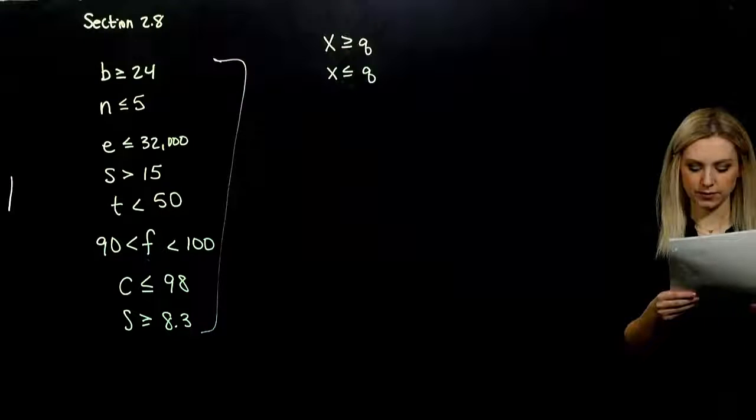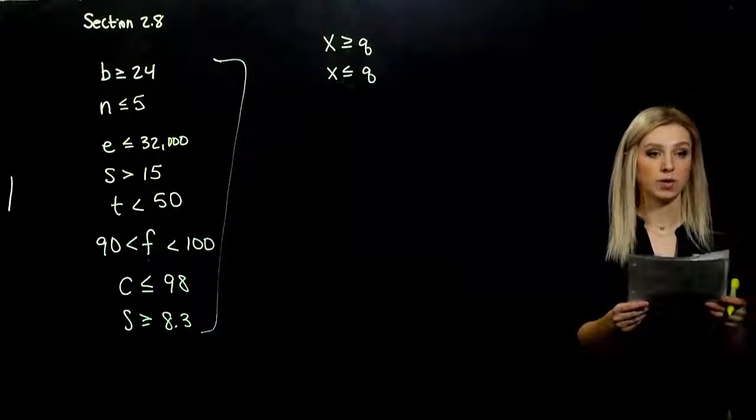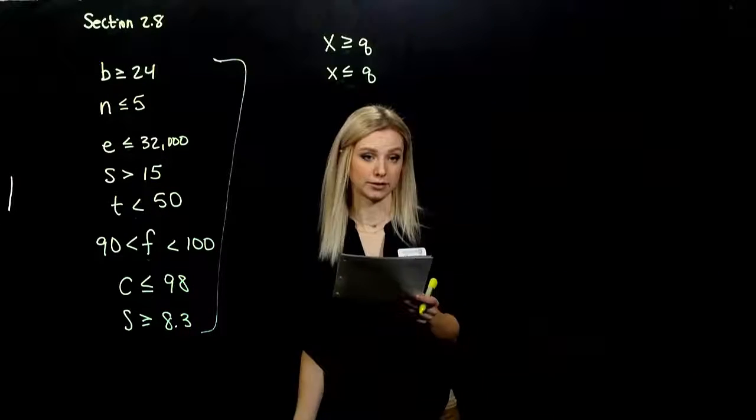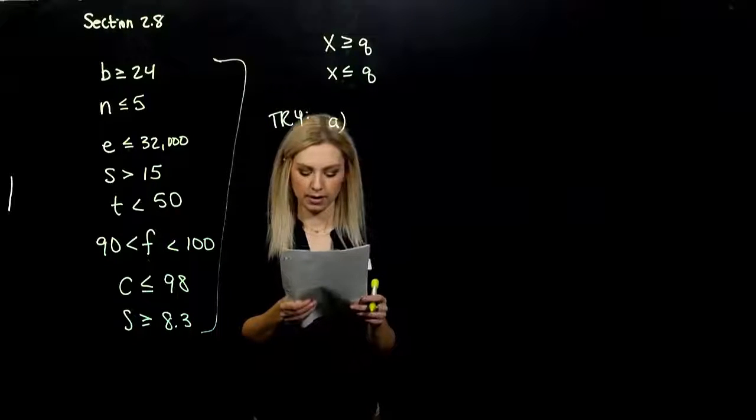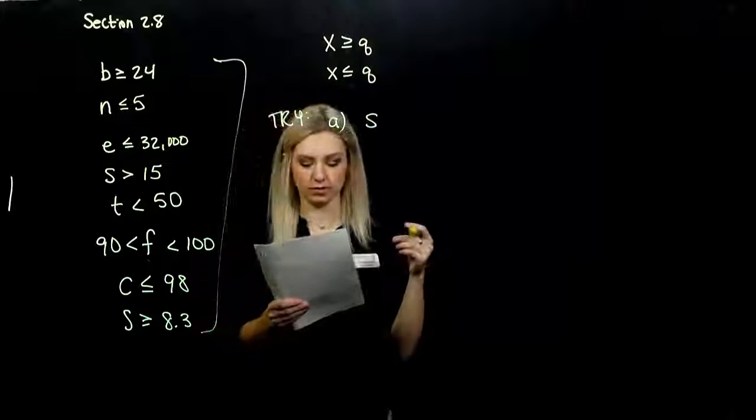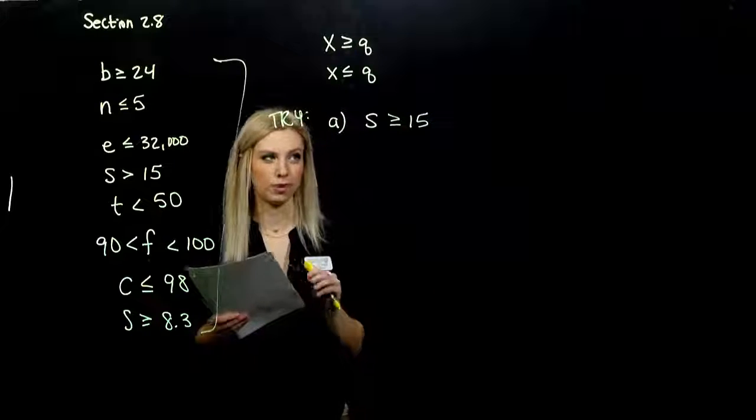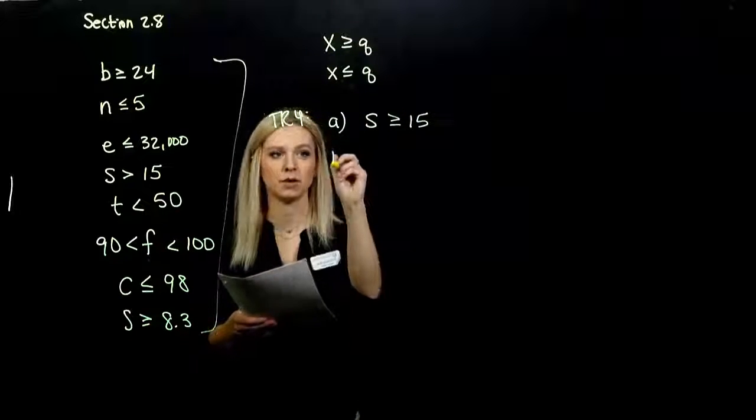So take these few tries. Translate those following sentences into inequalities. Use whatever variables you want to represent each of the subjects. So first one. Sarah worked no fewer than 15 hours last week. So S, I'm going to let it be Sarah, has to be greater than or equal to 15. No fewer than 15. It could be better than that. It could be exactly equal to 15.